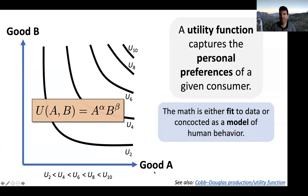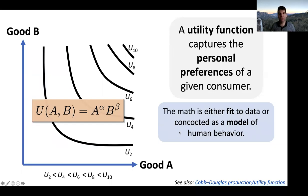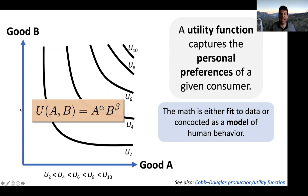The general shape captures salient features and can be customized and tailored to the individual. You either build utility functions through a fit to data, or you concoct them as a model of expected human behavior. We would expect that diminishing marginal returns will give particular shapes to these utility functions. The question then is: do we have a surrogate for these utility curves, rather than drawing them on a whiteboard every time?